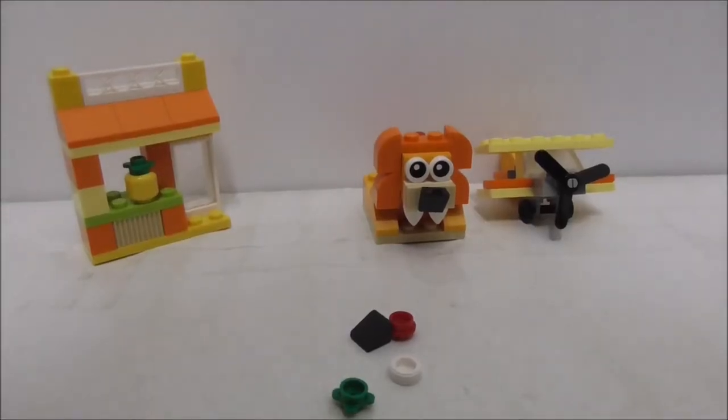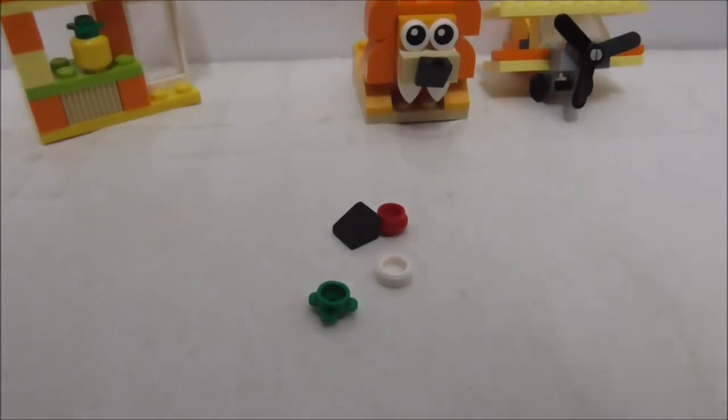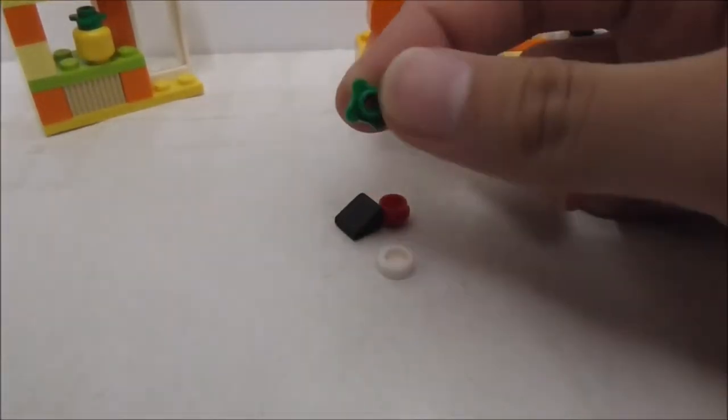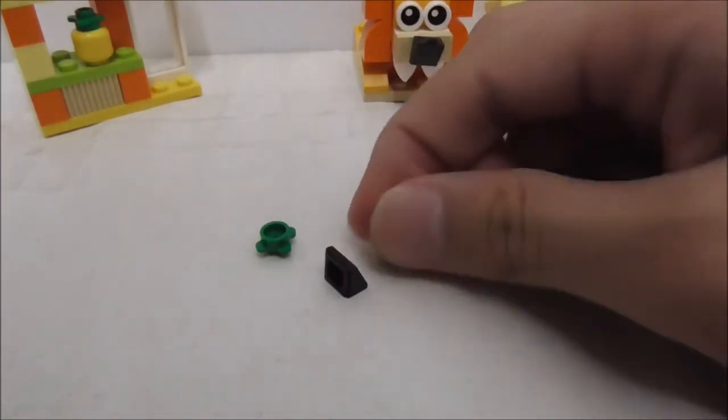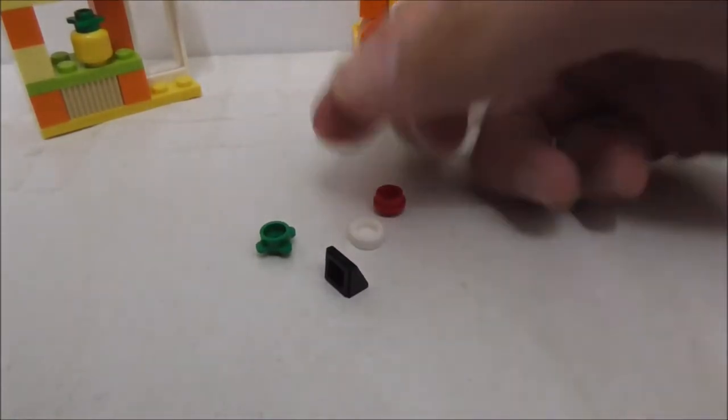So this is the set all built up. These are all the extra pieces right here. You got this flower cheese slope, this red stud, and this eye.